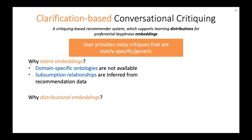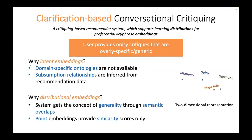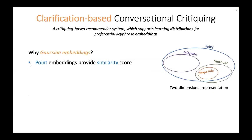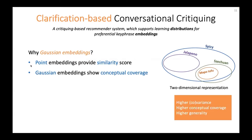We want to learn distributional embeddings because, in order to clarify a user's intention, the system needs to understand the concept of generality through distributional semantic overlaps. With point embeddings, we cannot understand the generality of concepts — only the similarities between them. But if we use Gaussian embeddings, we can get information on conceptual coverage. Concepts with higher covariance or determinant have higher conceptual coverage in the two-dimensional space, and therefore higher generality.